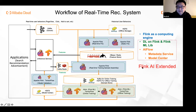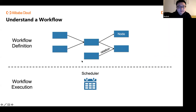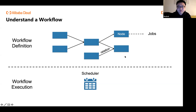We used to bundle deep learning on Flink and AI Flow together in a project called Flink AI Extended. Now we've transferred it into a Flink community organization called Flink Extended and separated them into two different projects. A workflow consists of a bunch of nodes forming a DAG. The nodes are jobs, and the relationship among them — called the 'finish before' relation — means after one job finishes, the next job runs. All current workflow schedulers use job-status-based scheduling.